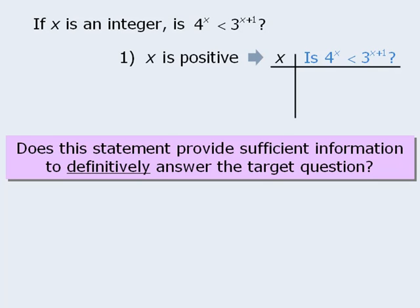So to begin, if x is positive, x could equal 1. We'll compare 4 to the power of x with 3 to the power of x plus 1 when x equals 1. If x equals 1, then 4 to the power of x will equal 4. If x equals 1, 3 to the power of x plus 1 will equal 9. So when x equals 1, the answer to our target question is yes — 4 to the power of x is less than 3 to the power of x plus 1.